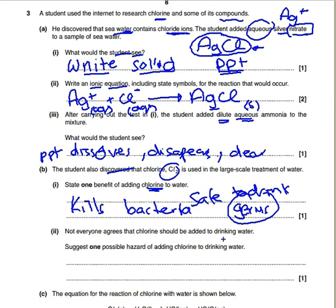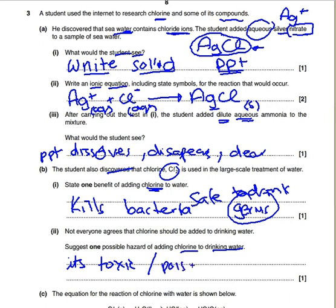Not everyone agrees that chlorine should be added to drinking water. Suggest one possible hazard of adding chlorine to drinking water. It's toxic - it's poisonous. That will do.